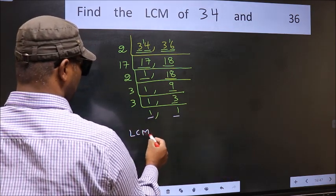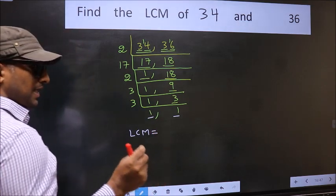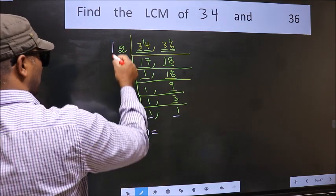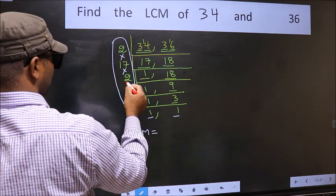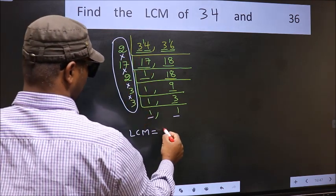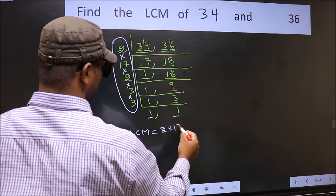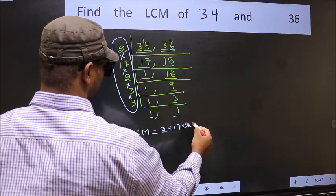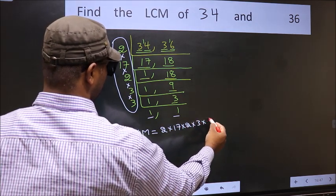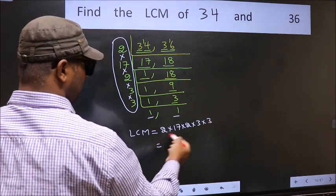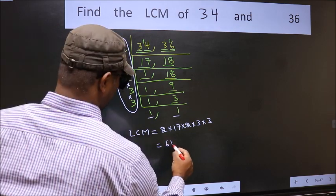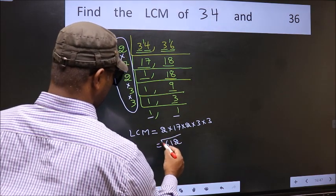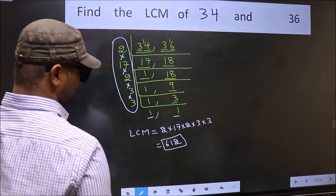So our LCM is, LCM is the product of these numbers. That is 2 into 17, into 2, into 3, into 3. When we multiply these numbers, we get 612 is our LCM. Let's go. 1, 2, 3. Let's go. Thank you.